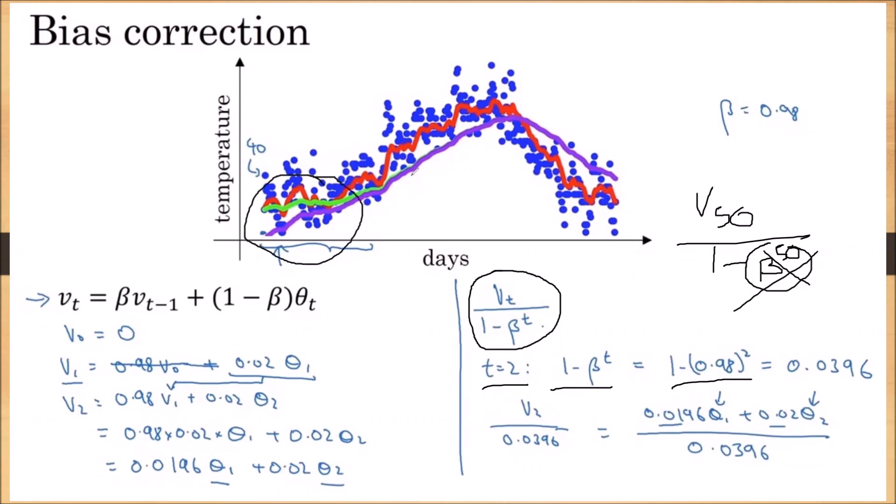So this is how the bias correction we are taking is affecting only in the initial stages, it is not affecting in the later stages. That is what also we are expecting. Our bias correction should change the initials, it should change the values in the initial stages only. So by implementing the bias correction, we are getting the moving averages for the initial stages also in the exact way.